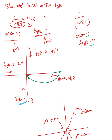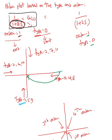In this video we're going to learn how to derive an approximate polar plot based on the type and order. The order of the system is the number of poles, which comes from the characteristic polynomial equation set equal to zero — how many poles are in the denominator gives you the order. In this case, with one pole, the order is one.